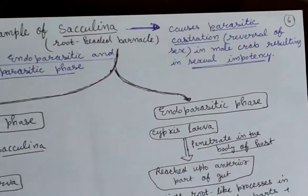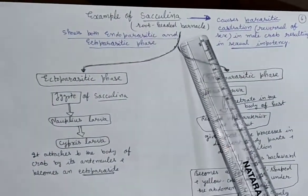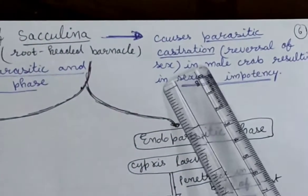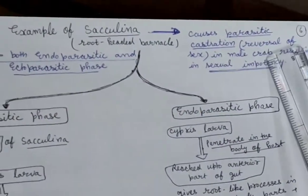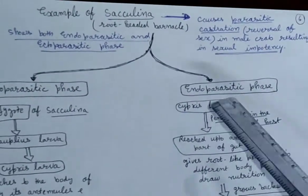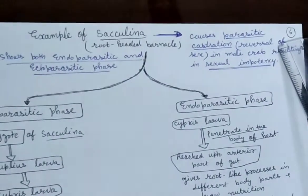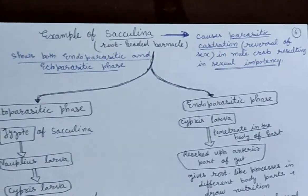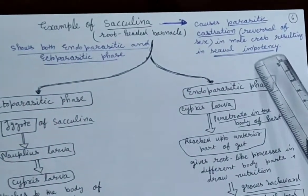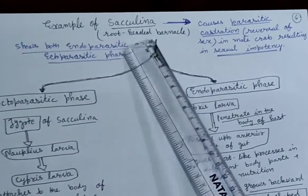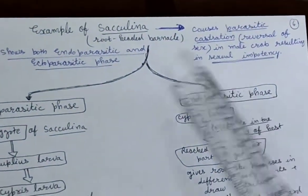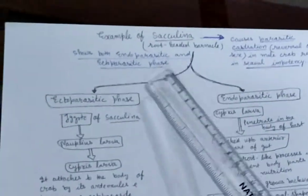The third type of parasitism based on location includes Seculina, a root-headed barnacle. It has a very peculiar feature: it causes parasitic castration, which is the reversal of sex. Seculina shows parasitism on crabs — it causes reversal of sex in the male crab, so the male crab changes into a female crab. This process is called sexual impotency, meaning reversal of sex. This peculiar characteristic arises in male crabs due to Seculina, and this is known as parasitic castration. Seculina is an example of organisms which show both endoparasitic and ectoparasitic nature.